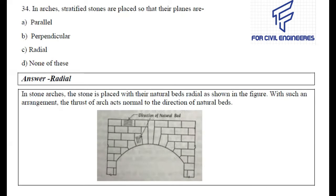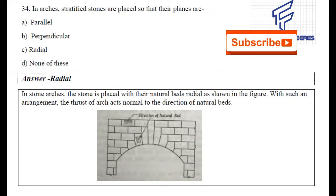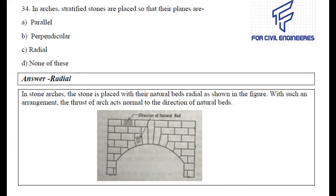Question number 34: In arches, stratified stones are placed so that their planes are — parallel, perpendicular, radial, or none of these? The right answer is radial. In stone arches, the stone is placed with their natural beds radial, as you can see in the figure. With such an arrangement, the thrust of the arch acts normal to the direction of natural beds.